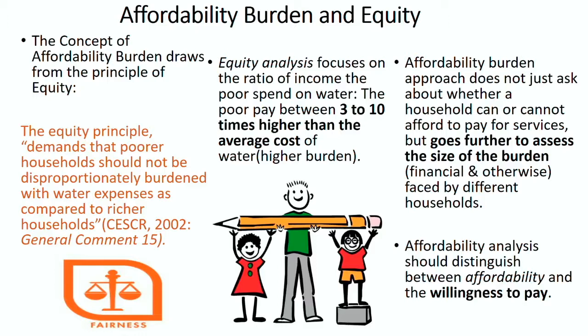In accessing water, we follow the same principle — paying more attention to those who carry the highest burden. In practice it's not simple. Poor people in informal settlements actually pay at least three to ten times higher per unit than those connected to the network. The affordability burden analysis goes beyond asking 'can the poor pay?' to asking how we can improve their situation.